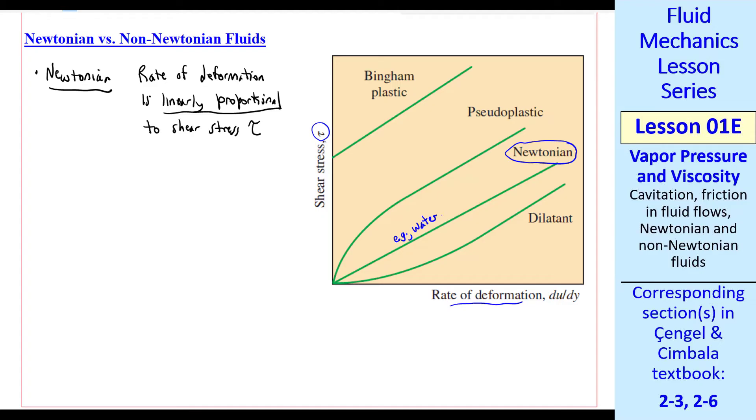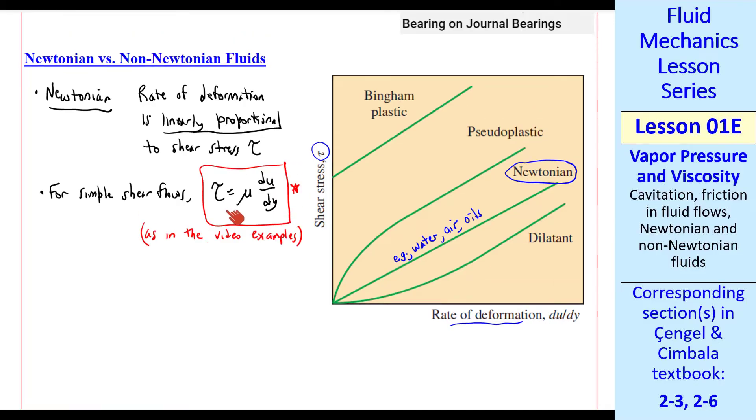Most fluids we'll use in this course, water, air, oils, gasoline, these are all Newtonian fluids. For simple shear flows, where there's a shear in velocity in the y direction, tau is just mu dU/dY, as in the two video examples I just showed. So we see that tau is linear with dU/dY, with the coefficient being mu, which we assume is constant in this simple expression.